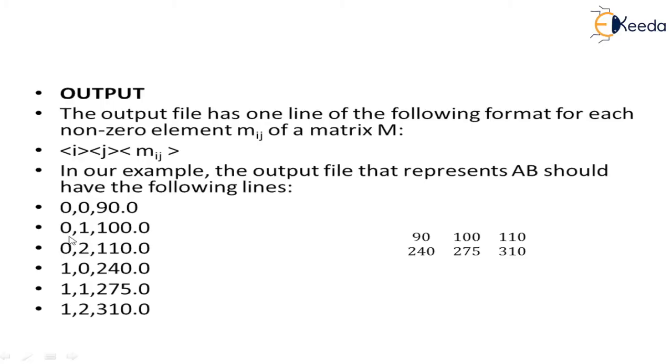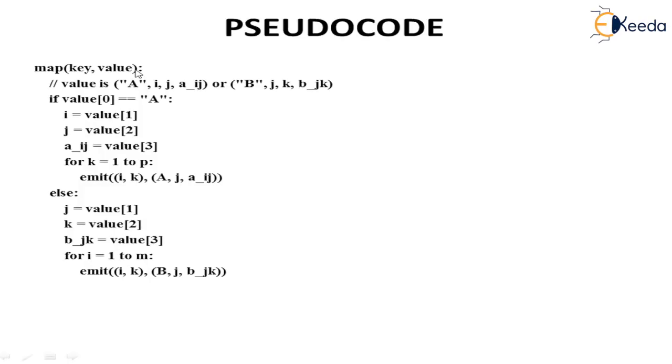This is how we represent the output file format. We understand what format we have given to input and in what format we will get the output. This will be the output in this format, not in matrix format. If we want, we can create that using programming logic. Now understand the pseudocode. If you understand the previous example, you can really understand this code.